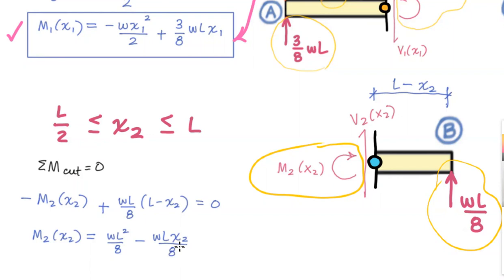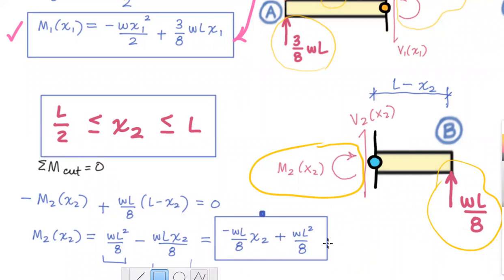And the way that I would prefer you to write these in your final answer is to just descend the polynomial in order of the exponent for position. So here we have our first term, which would be minus w l over eight x two, our second term is a constant because there's no x two there. And so that would be plus w l squared over eight. So we have our solution, the moment function and its corresponding domain.